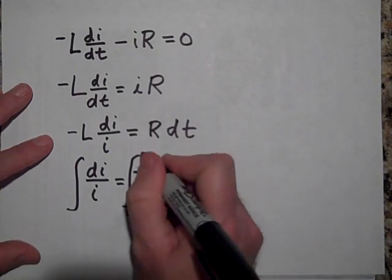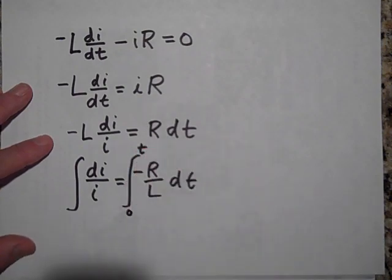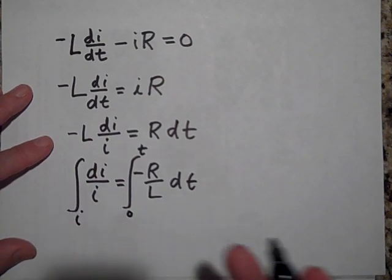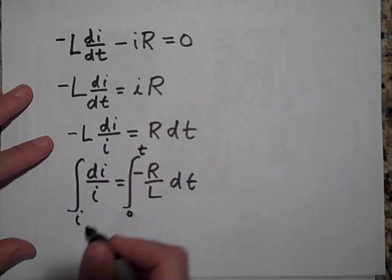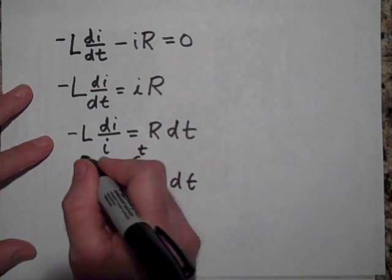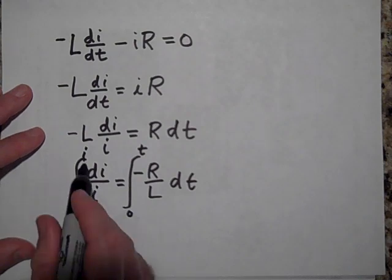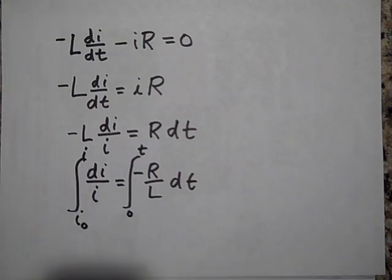And so to get the di and the dt out of there, I'm going to integrate both sides. And I'll start at t equals zero and I'll go to some other time t, and I'll start at I has some current in it to some, this will be I initial and then this will be some other I.